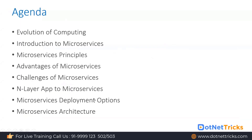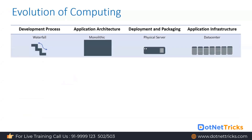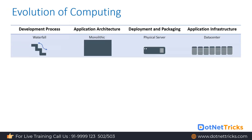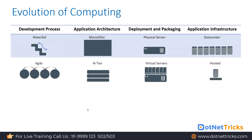Let's get started with microservices. First, let's understand how microservices have evolved, what the principles are, and what the challenges are. Looking at the evolution of computing: initially we followed the waterfall model while building software, and for application architecture we followed the monolithic architecture. For deployment we used a physical machine or physical server, and in a data center we had multiple physical servers for deployment.